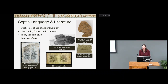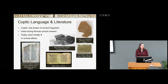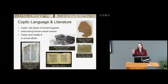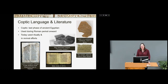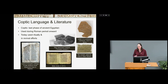Coptic is the last phase of the ancient Egyptian language, used during the Roman period and forward. Eventually the spoken and administrative written language that takes over is, of course, Arabic. Today it's used in the Coptic church ritually, and also in a couple of revival efforts in the US, Jerusalem, and Cairo, but really pretty much not spoken.